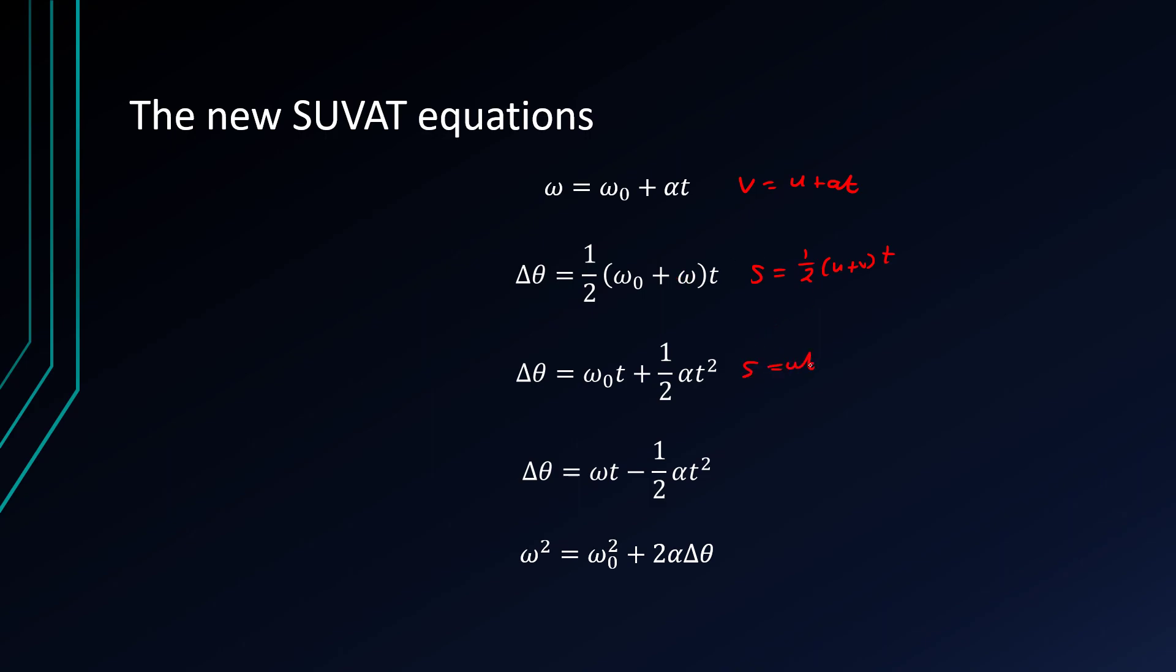Next, this one comes from S equals U T plus a half A T squared, and now reads delta theta equals omega nought T plus a half alpha T squared.